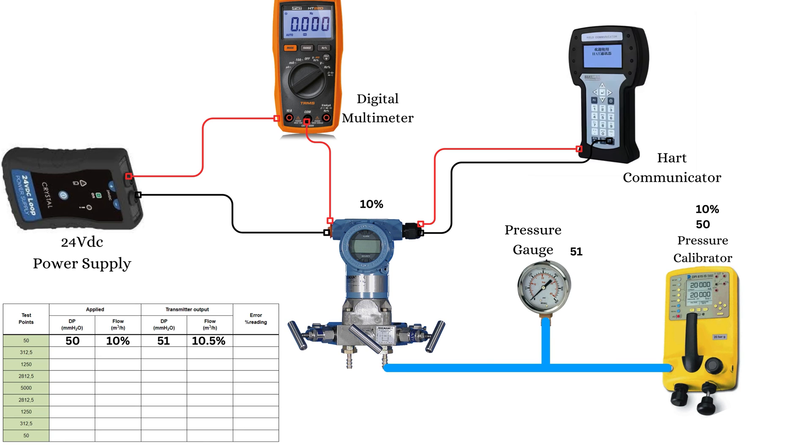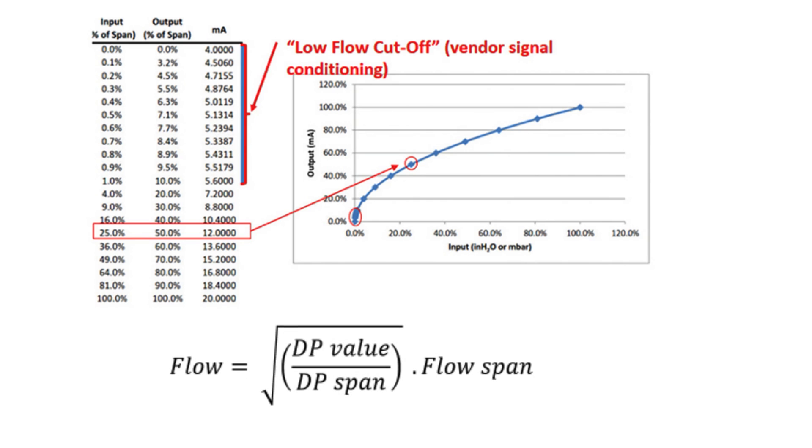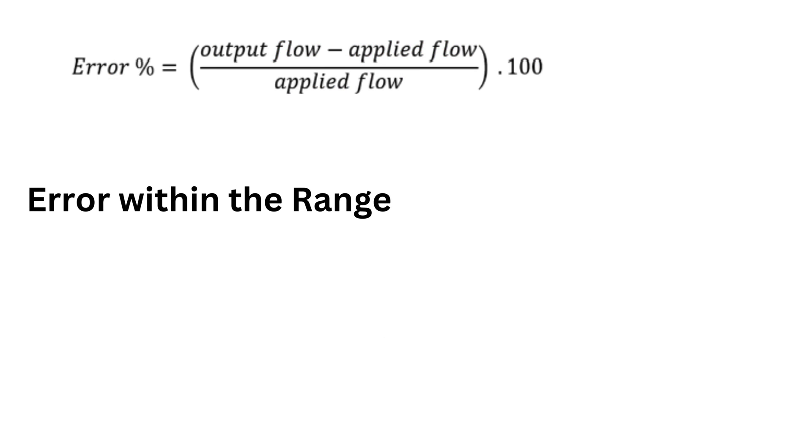As the square root extraction is done by the transmitter, its output represents the flow rate. To calculate the error on the output, we will have to compare the measured flow rate with the applied flow rate. As we can only apply a DP, we will have to calculate the applied flow with the following formula. Do this calculation for every test point and fill in the flow rates in the third column, applied flow.